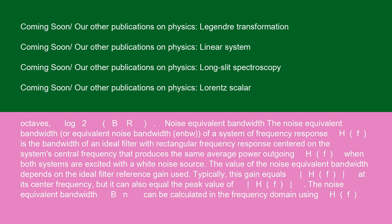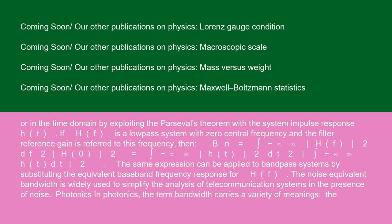Noise equivalent bandwidth: the noise equivalent bandwidth or equivalent noise bandwidth, NBU, of a system of frequency response H of F is the bandwidth of an ideal filter with rectangular frequency response centered on the system's central frequency that produces the same average power outgoing H of F, when both systems are excited with a white noise source. The value of the noise equivalent bandwidth depends on the ideal filter reference gain used. Typically, this gain equals H of F at its center frequency, but it can also equal the peak value of H of F. The noise equivalent bandwidth, B N, can be calculated in the frequency domain using H of F, or in the time domain by exploiting the Perceval's theorem with the system impulse response, H of T.